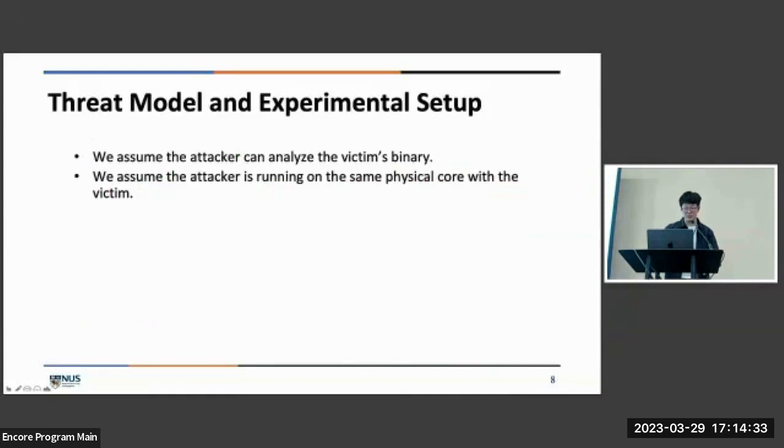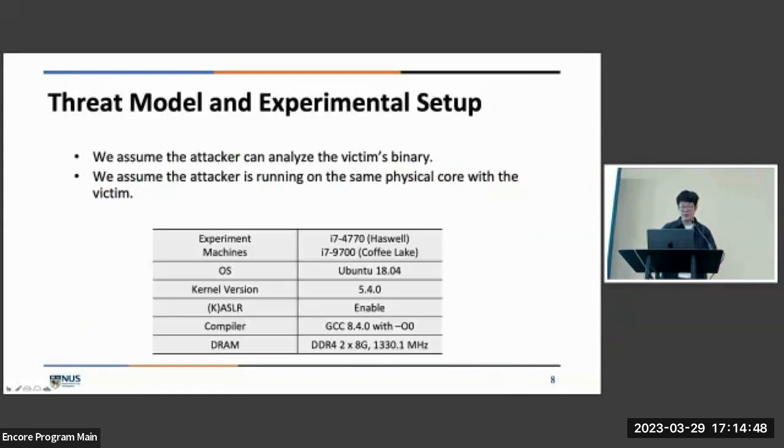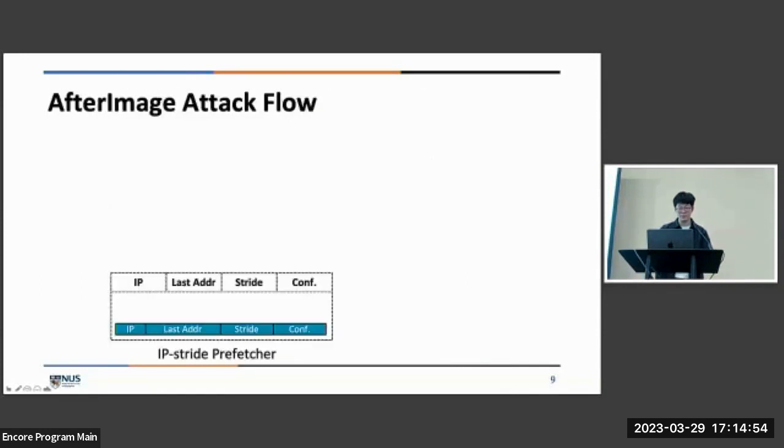For the threat model, we assume the attacker can analyze the victim binary to get some IP information. And also, the attacker is running on the same physical core with the victim. For the experiment, we launch our attack on a Haswell and a Coffee Lake machine with Ubuntu 18.04. Now I will give an overview of AfterImage.